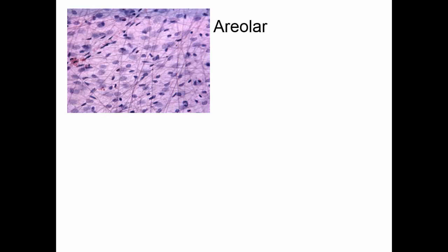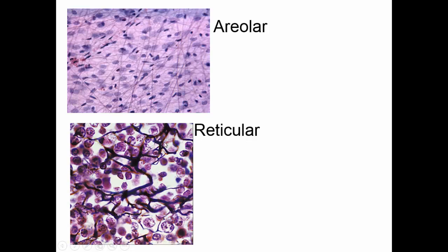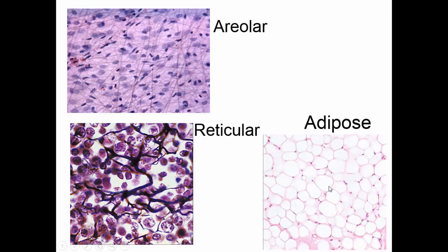One of the most common tissues in the body is areolar tissue. Here the cells are not particularly touching each other — you see fine reticular fibers and fine collagen fibers, and the matrix glycoprotein is fairly liquid. Areolar tissue is sort of like post-it note stuff; it helps hold things together. In reticular tissue, we have heavier collagen-like fibers that form a network supporting other cells — found in organs like the liver and spleen. And then there's adipose tissue, which looks like a fine pink net because the cells are full of fat. This is a storage tissue.